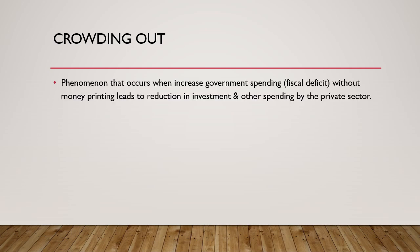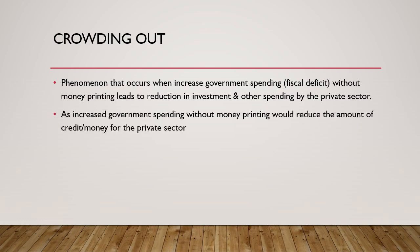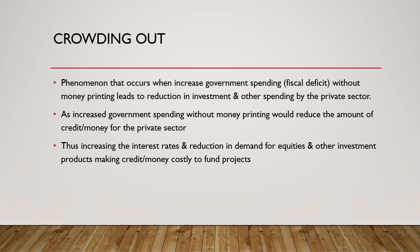Let's formally define what crowding out really is. Crowding out is a phenomenon that occurs when the government increases its spending — in other words, runs a fiscal deficit — and funds it not by money printing but by selling its debt to private domestic investors. This in turn leads to a lowering of investment and other spending by the private sector, because the increase in government spending without money printing reduces the amount of credit or money available to the private sector, which then increases interest rates and reduces demand for other investment products like equities.